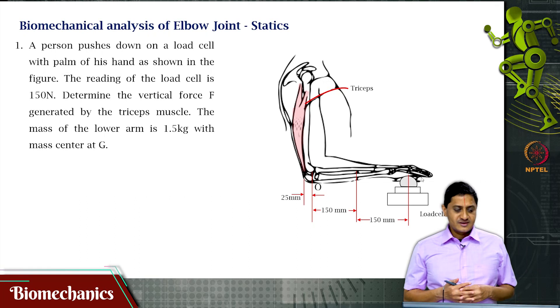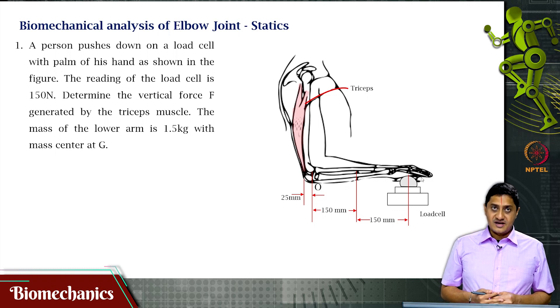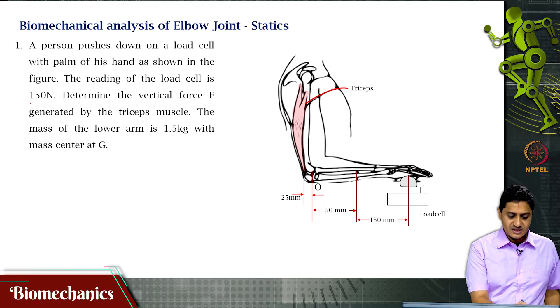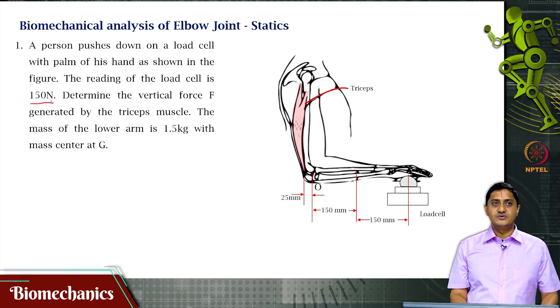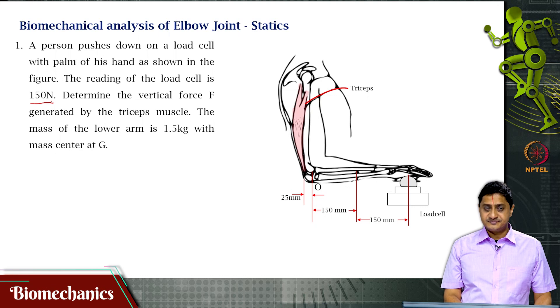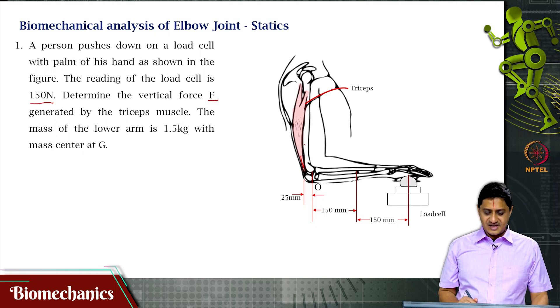Here is a simple problem. A person pushes down on a load cell with the palm of his hand as shown in the figure. The reading that is measured on the load cell is 150 newtons. The question is find the vertical force F that is generated by this triceps muscle that is responsible for producing this movement or action.